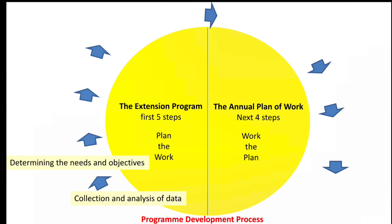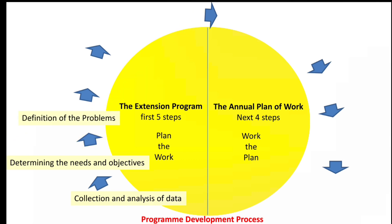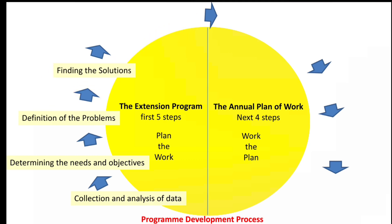The third step is definition of the problems. That means we must be very clear about which problem we are going to solve — whether it is problematic soil, more cost of cultivation, lacking farm intelligence, or marketing intelligence, etc. With the help of our knowledge and our network, we have to find various solutions to treat their particular problem.